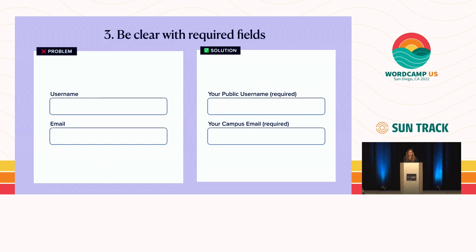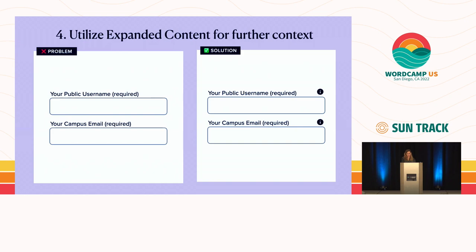Number three: be clear with your required fields. Without requirements indicated, we don't know what is required. Asterisks are okay but you have to be careful making sure they're very clear — clearly stating that something is 'required' is even better. Also, if there are more fields required than not, switching to 'optional' on the non-required fields works just as well and reduces clutter. We also want to utilize expanded content for further context — providing info in a tooltip from an icon lessens the cognitive load and assists with any rules needed without leaving the form.